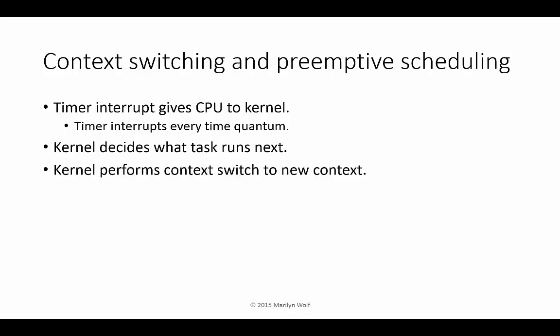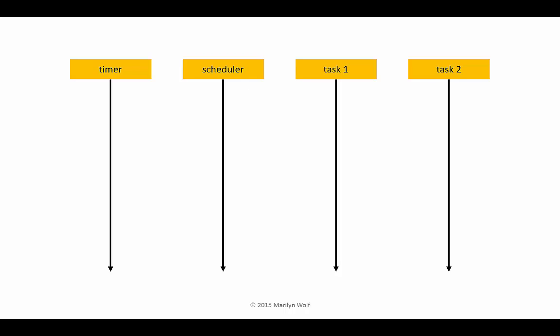Context switching is the process of changing execution from one process to another process. We can use a UML sequence diagram to understand the basic procedure. The timer interrupts and calls the scheduler, which then decides what to run next — in this case, task one.